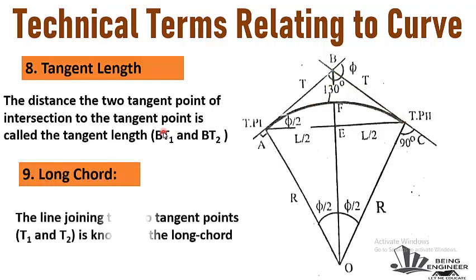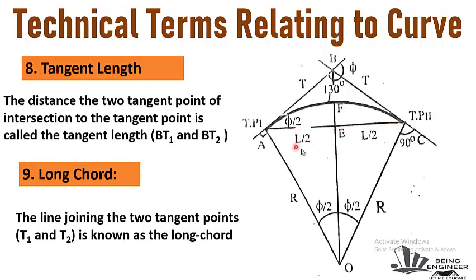The ninth term is long chord. The line joining the two tangent points T1 and T2 is known as the long chord. The straight line between tangent point 1 and tangent point 2 is called the long chord, represented by L. Half of the long chord is L/2 and the other half is also L/2.